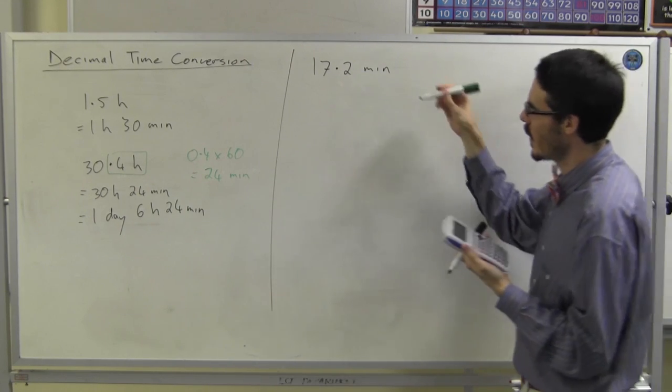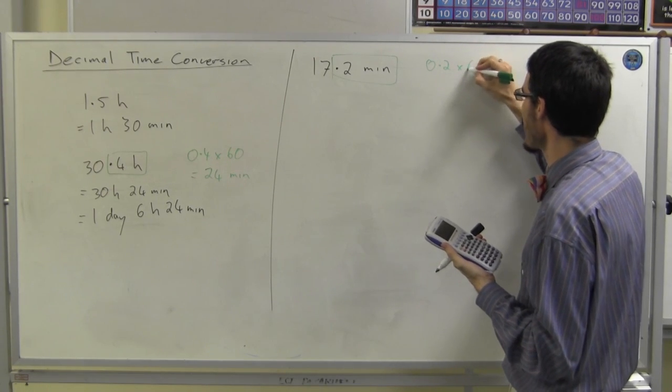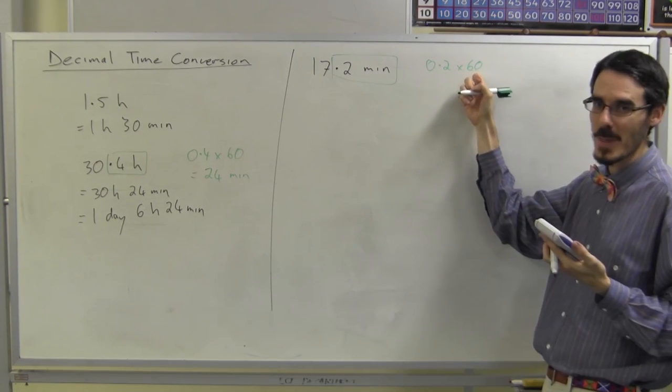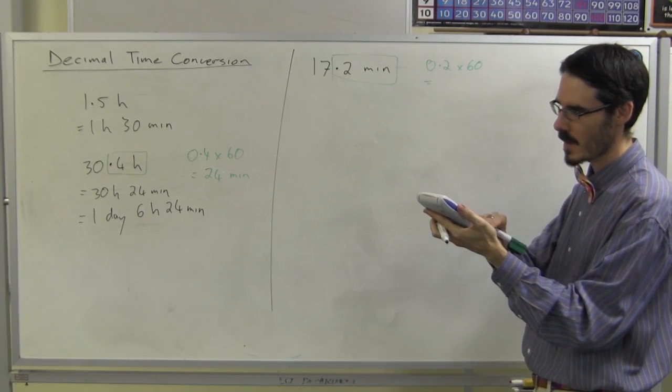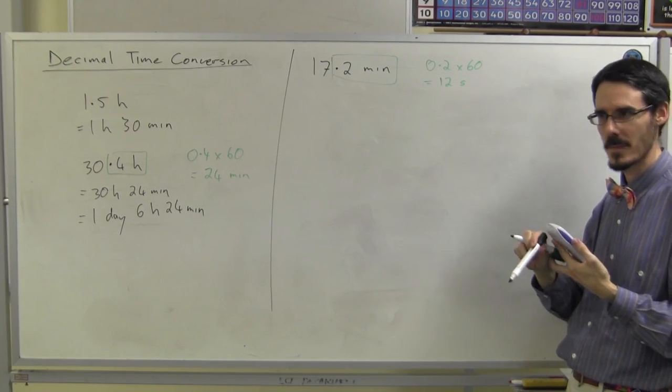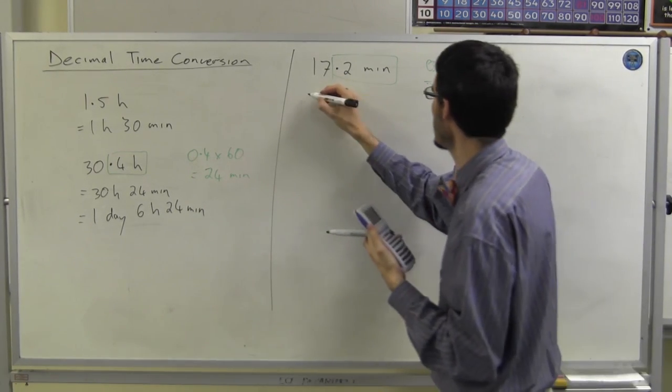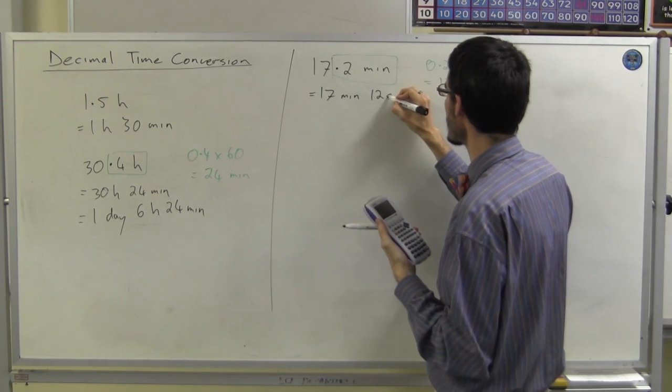But if I've got 0.2 minutes and I multiply it by the number of seconds in a minute, I'll get the number of seconds, that is. 0.2 times 60. 12 seconds. Which means this must be 17 minutes and 12 seconds.